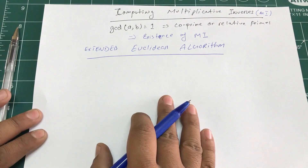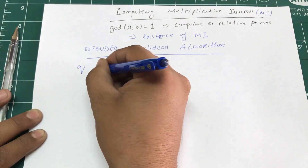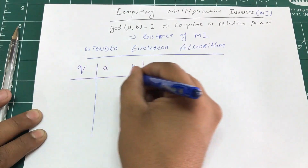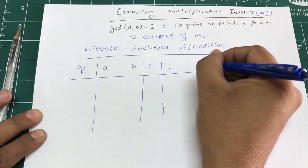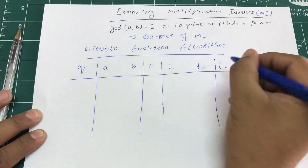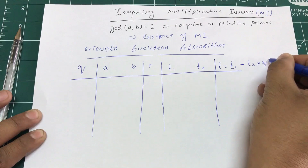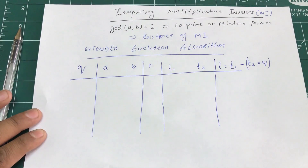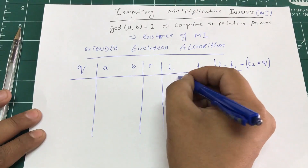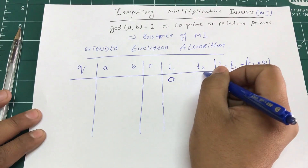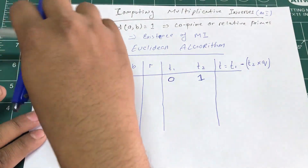We're going to look at the extended Euclidean algorithm that we previously used to compute GCD. We have columns for the quotient, numbers a and b, the remainder, and I'm introducing two additional values: t1, t2, and a t value computed as t1 minus t2 multiplied by q. The initial value of t1 is always 0 and t2 is always 1 — that's all you need to remember.